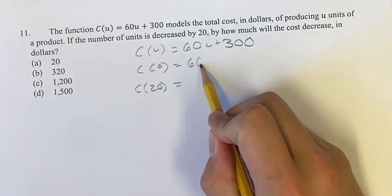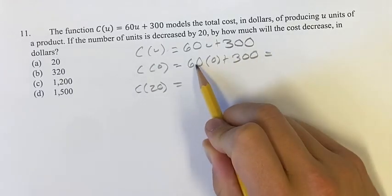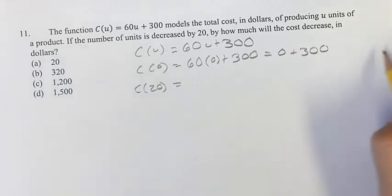So C(0), plugging in 0 for u, is 60 times 0 plus 300, which equals 0 plus 300. That's just 300.